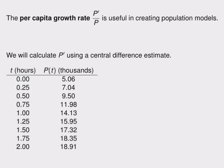So the big idea that we're going to use to do that is called the per capita growth rate, which is P' over P, the rate of growth of the bacteria divided by the number of bacteria. This is very useful in creating population models. The reason we're thinking about it now is because we noticed that as P got larger, P' seemed to get smaller. And so we want to compare the two of them, which we'll do by dividing them.